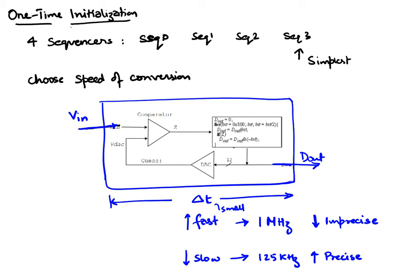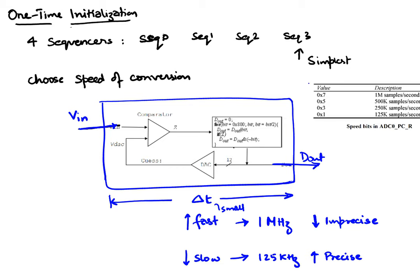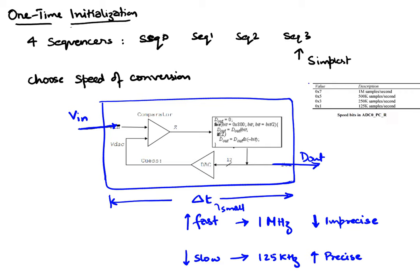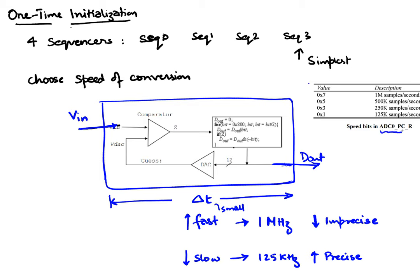So we choose based on the problem you're working on — if you need really fast sampling, you sacrifice precision, but you can choose up to 1 megahertz. The way we choose our speed is determined by a table. There is a device register called ADC0 PC register, which chooses the speed. This is a three-bit register that can take values of one, three, five, and seven. If you put a one, you get 125 kilohertz; all the way up to one megahertz, or one million samples per second.